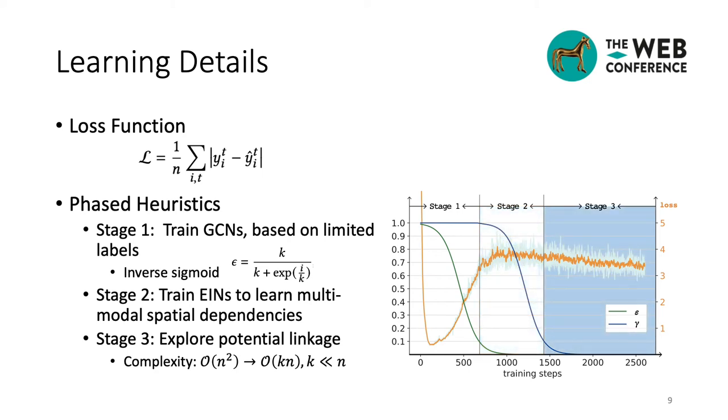In the third stage, the EINs begin to explore potential linkages among all datasets, rather than re-quantifying the links that are already known. Note that since the EIN samples k possible neighbors before each epoch, the training complexity reduces from O(n^2) to O(kn), where k is far less than n.